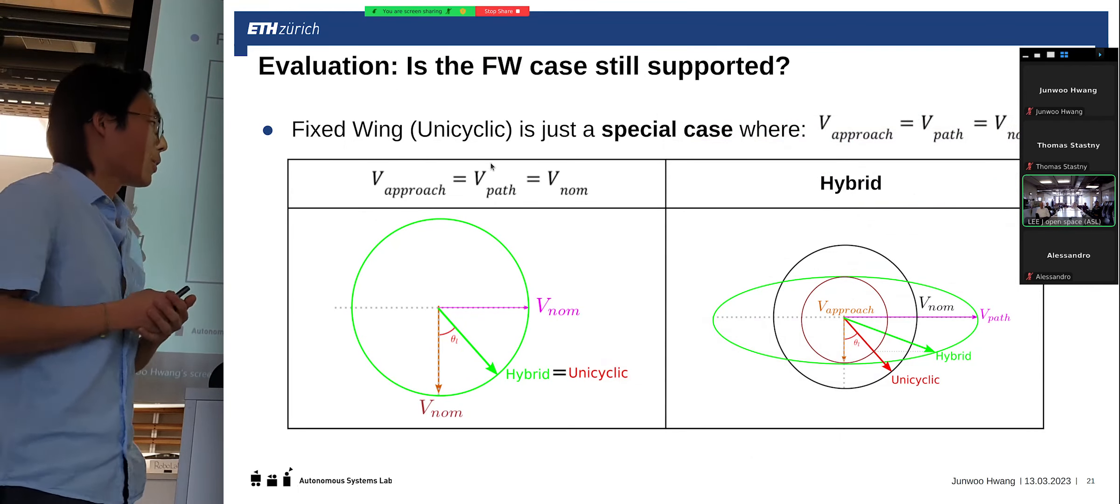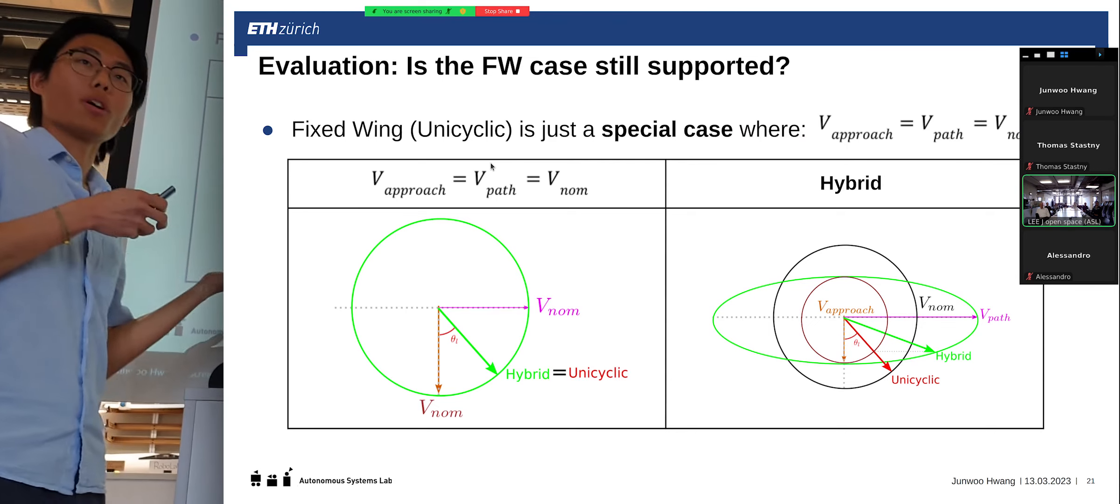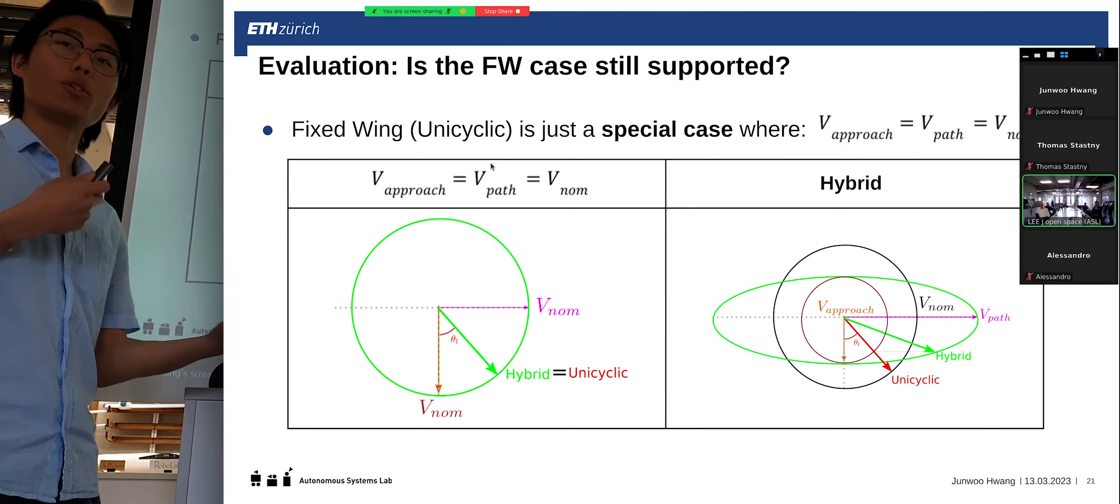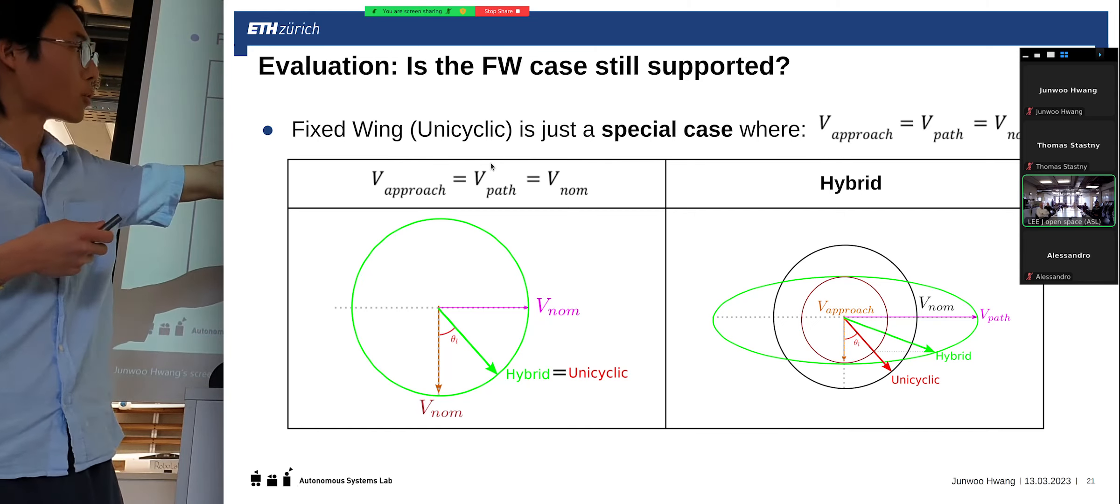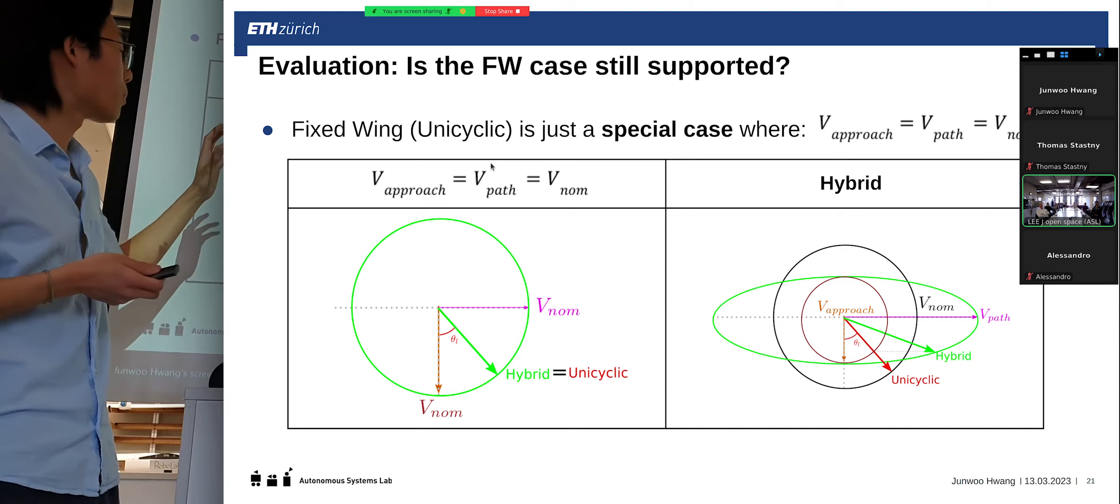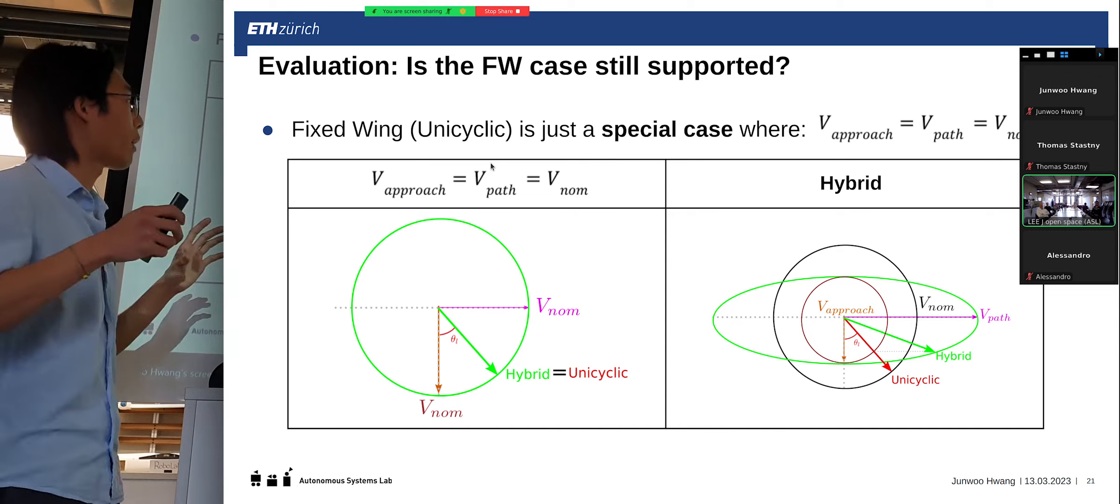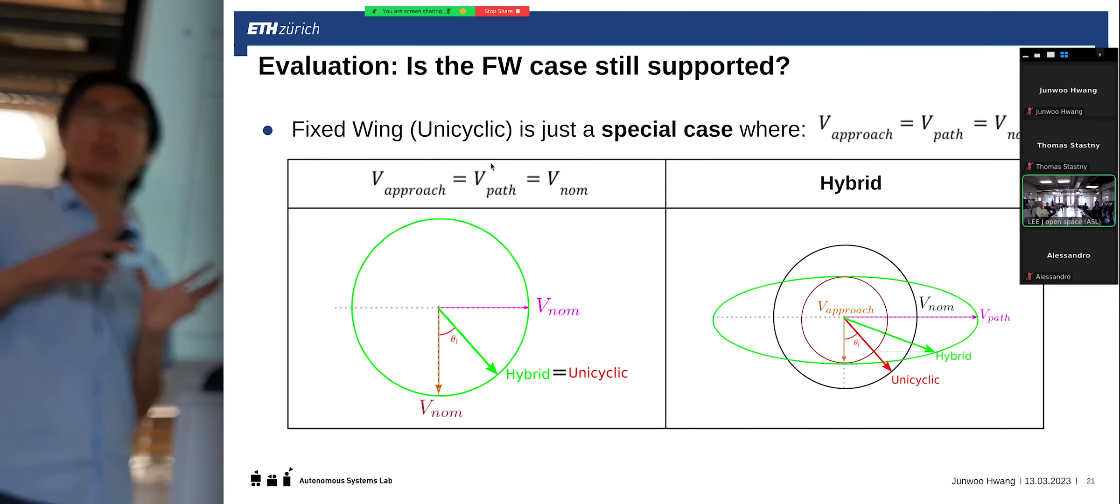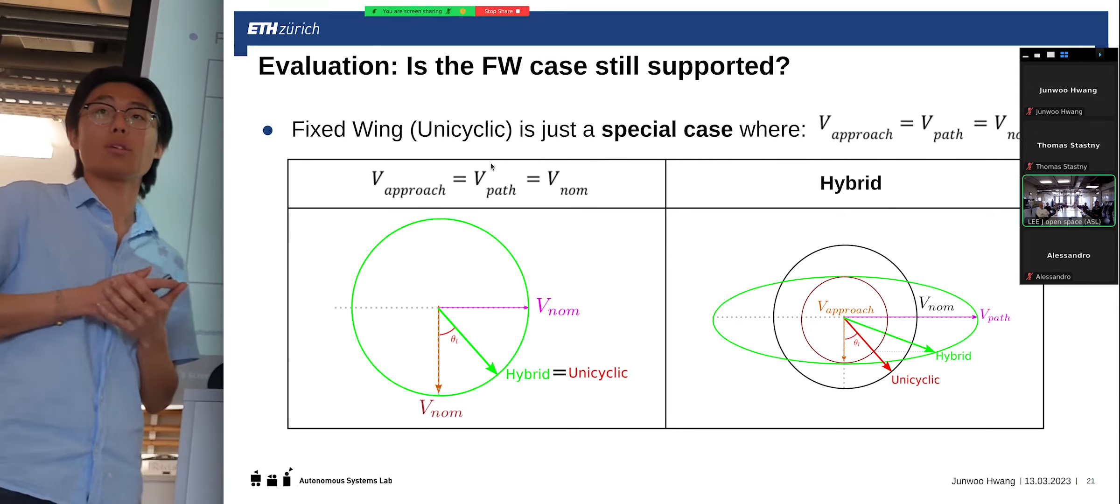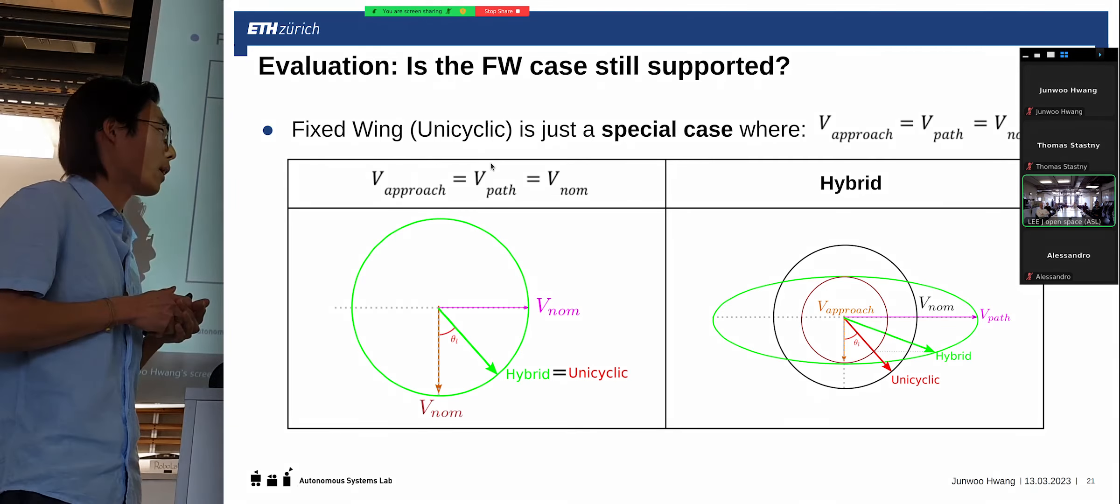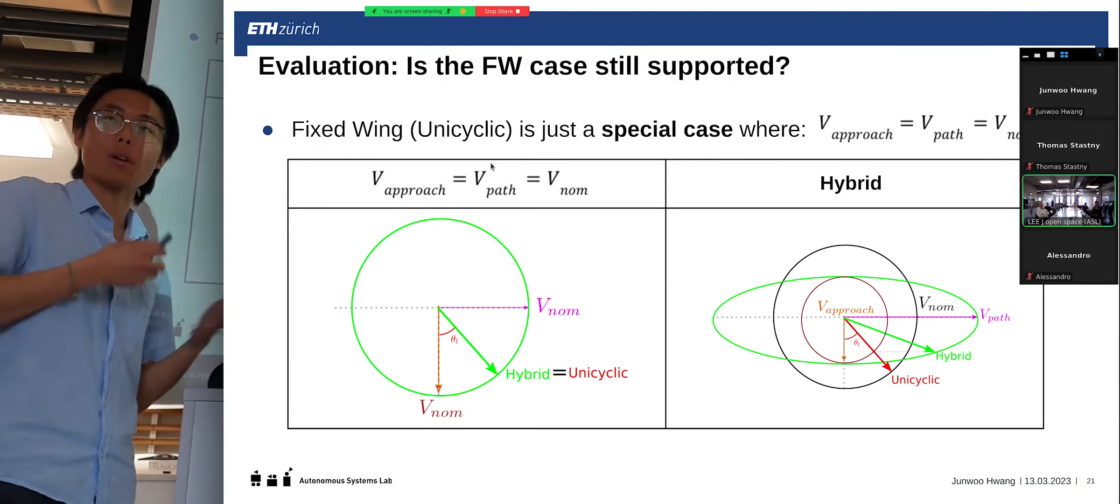So, one important thing is, of course, does this new approach still support the previous fixed-wing use case, because we want to be unified. And, that is the case, because our hybrid approach, basically, has more flexible ellipsoid formulation. But, for the fixed-wing use case, we just have to constrain the velocity approach and velocity path into the nominal speed, and, thus, it will form a circle, which is identical to the original guidance. And, thus, we can benefit from the original guidance theories and everything.